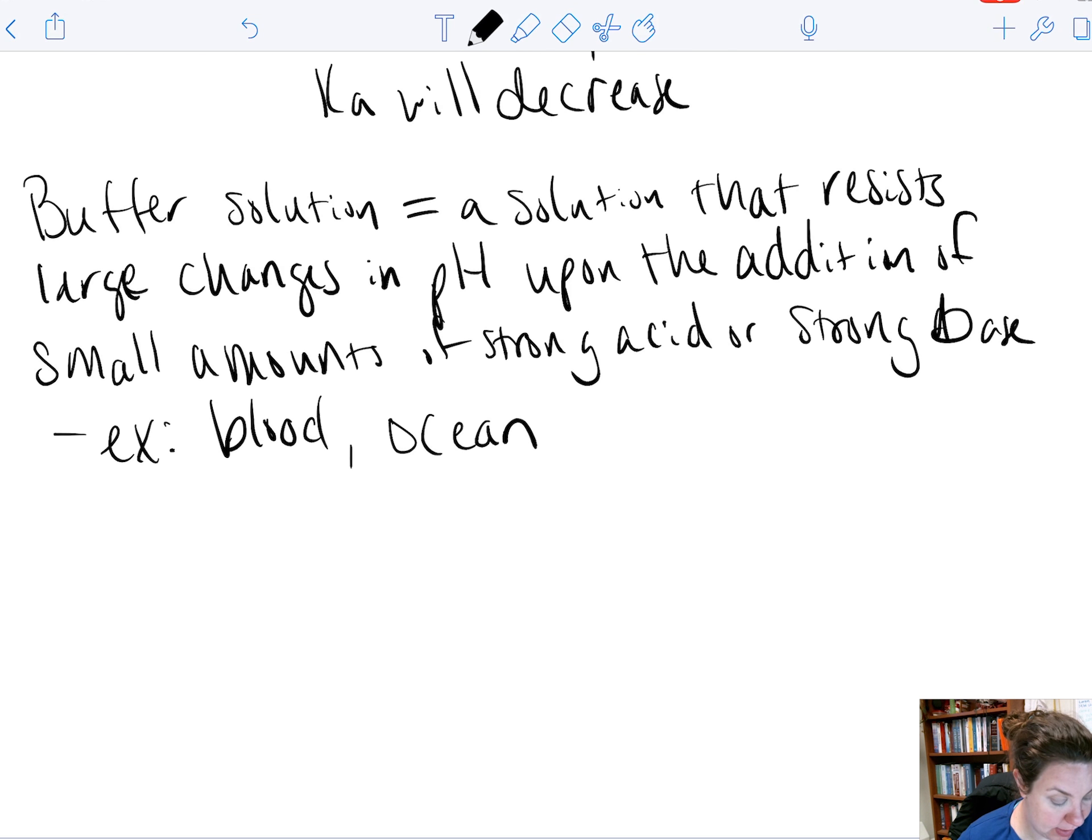Okay. So examples of buffers. A buffer itself is made of a weak acid and its conjugate base or a weak base and its conjugate acid.